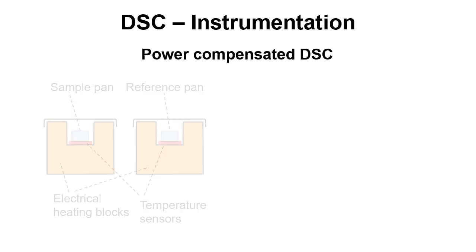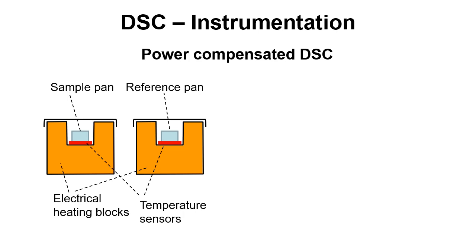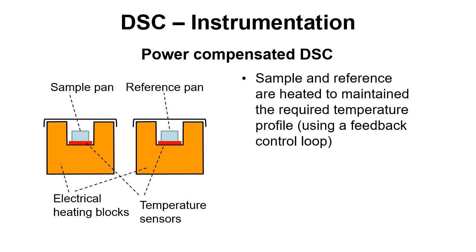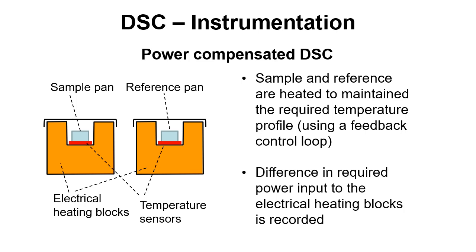For power compensated DSC, we have two separate heaters with a sample pan in one and a reference pan in the other. Both are heated to maintain the temperature profile that has been programmed in using a feedback control loop — we decide in the software what the temperature profile should be, and the heating blocks keep the sample pan and reference pan on those profiles. The difference in power required to heat the two blocks is recorded, and that gives us the result we then analyse.